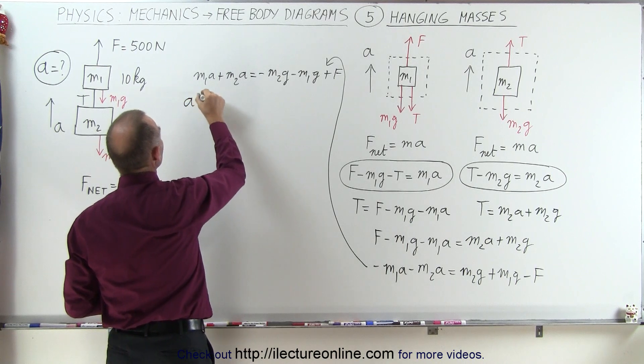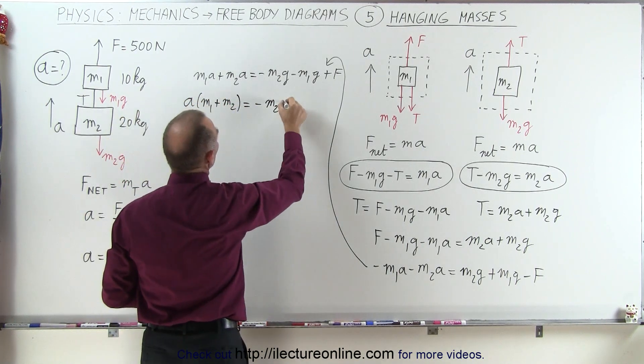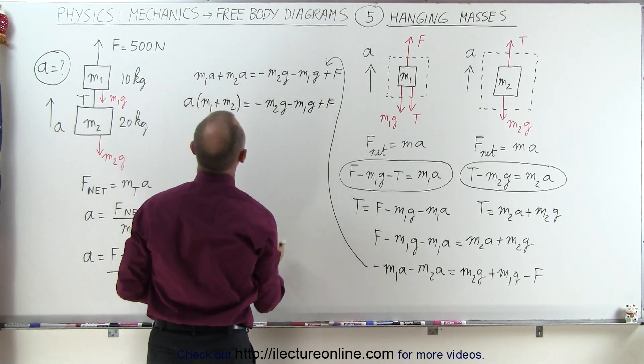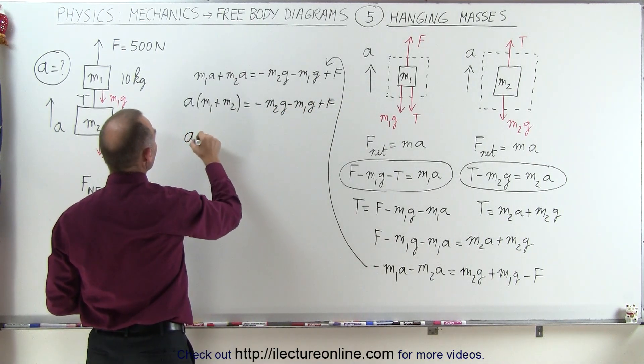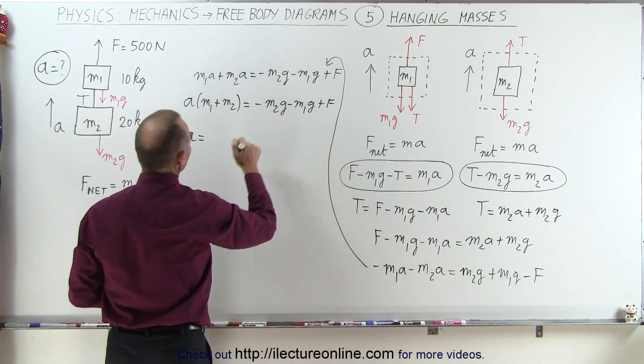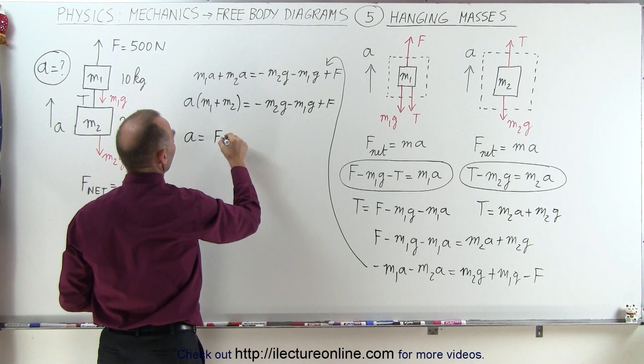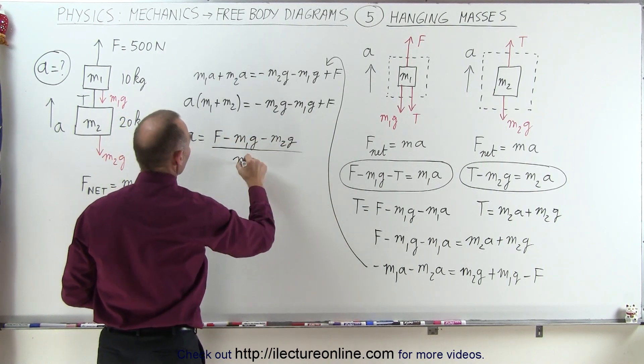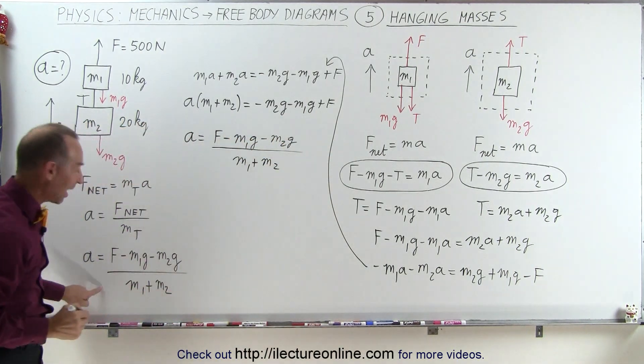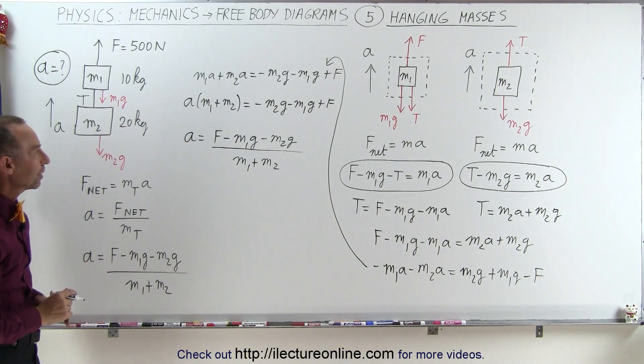Now we factor out an a, we have a times m1 plus m2 equals f minus m1 g minus m2 g, and then finally we have a equals, and I'll put the f in front, the force by which we apply minus m1 g minus m2 g divided by m1 plus m2, and notice we have the exact same equation as we got over here.